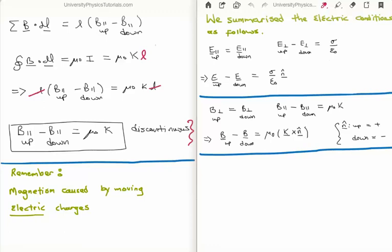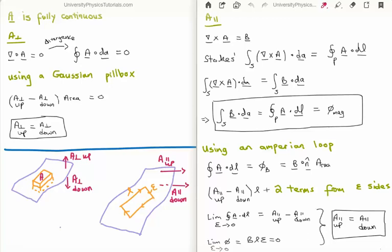What remains is to analyze the boundary conditions for the magnetic vector potential A, which is fully continuous. Looking at the perpendicular component: we once again use a Gaussian pillbox, employing Gauss's law and the divergence theorem. Since the divergence of A is zero, the closed surface integral of A dot dA is also zero. We therefore get that the difference between the two components of the magnetic vector potential multiplied by the area equals zero, meaning the perpendicular component of A is continuous, just like the magnetic field was.